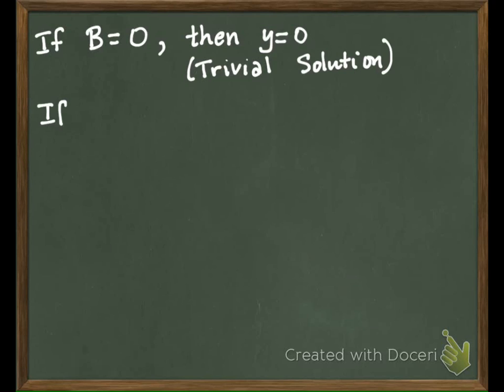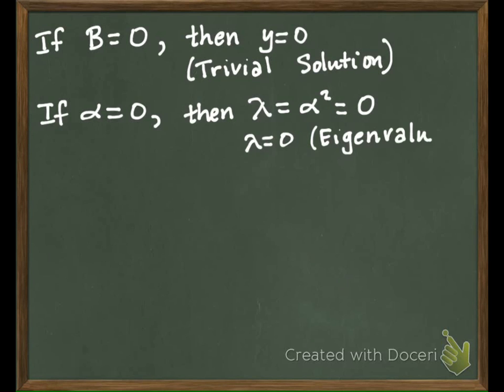If alpha equals zero, then remember lambda was alpha squared, so that would make lambda equal to zero. So lambda equals zero in this case would be considered an eigenvalue. Is there a function associated with that? So our differential equation would become Y double prime plus zero Y equals zero, or Y double prime equals zero. Can I solve that?